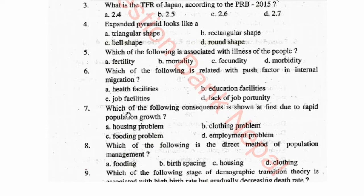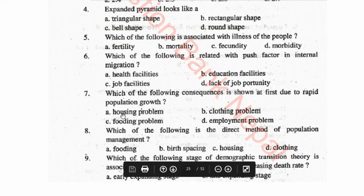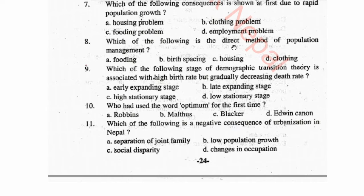Question 7: Which of the following consequences is shown first due to rapid population growth? Options: housing problem, clothing problem, food problem, employment problem. Question 8: Which of the following is the direct method of population management?